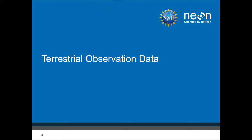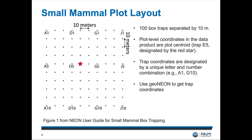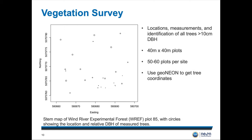Let's talk a bit more about our terrestrial observed data. One aspect is our small mammal traps — we put out a grid of small mammal traps at these different sites. You can use the geoneon package to get highly precise easting and northing coordinates for each one of these traps. We also do a vegetation survey where we measure all trees greater than ten centimeters DBH in 40 by 40 meter plots across all of the tower and distributed base plots.